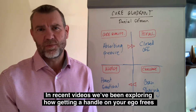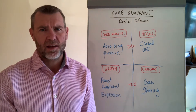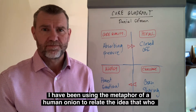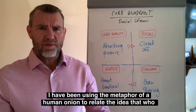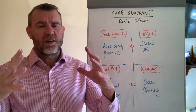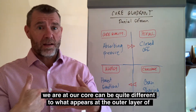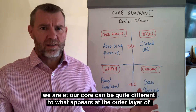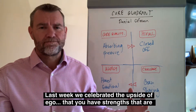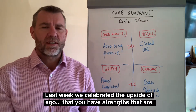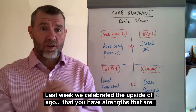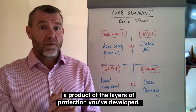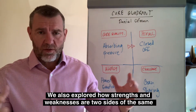In recent videos we've been exploring how getting a handle on your ego frees up better leadership choices. I've been using the metaphor of a human onion to relate the idea that who we are at our core can be quite different to what appears in the outer layers of us. Last week we celebrated the upside of ego — that you have strengths that are a product of the layers of protection you've developed.